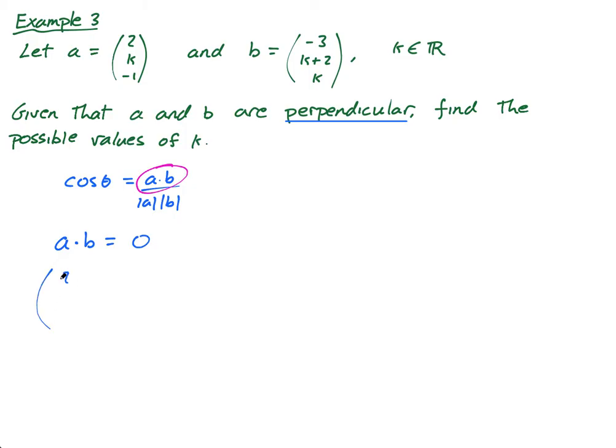So a dot b equals zero. I have a is 2k negative 1. So 2k negative 1 dot b negative 3k plus 2k. This has to equal zero. Now you'll see 2 times negative 3 is negative 6, plus k times k plus 2, minus k equals zero.